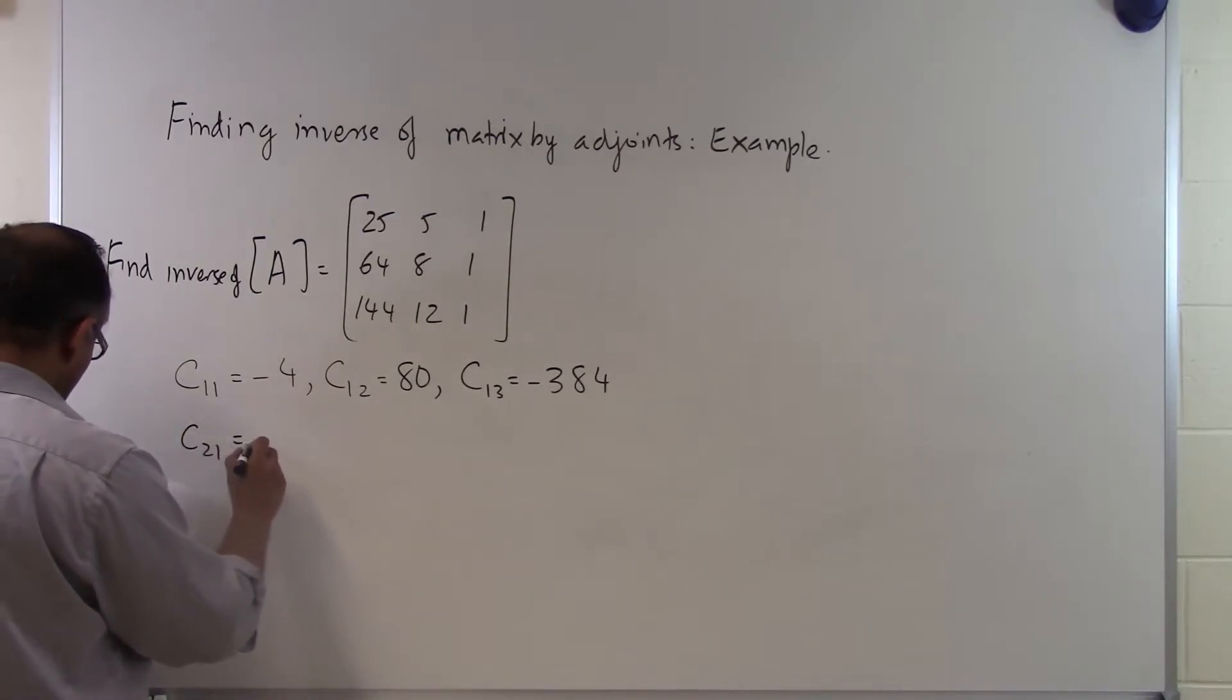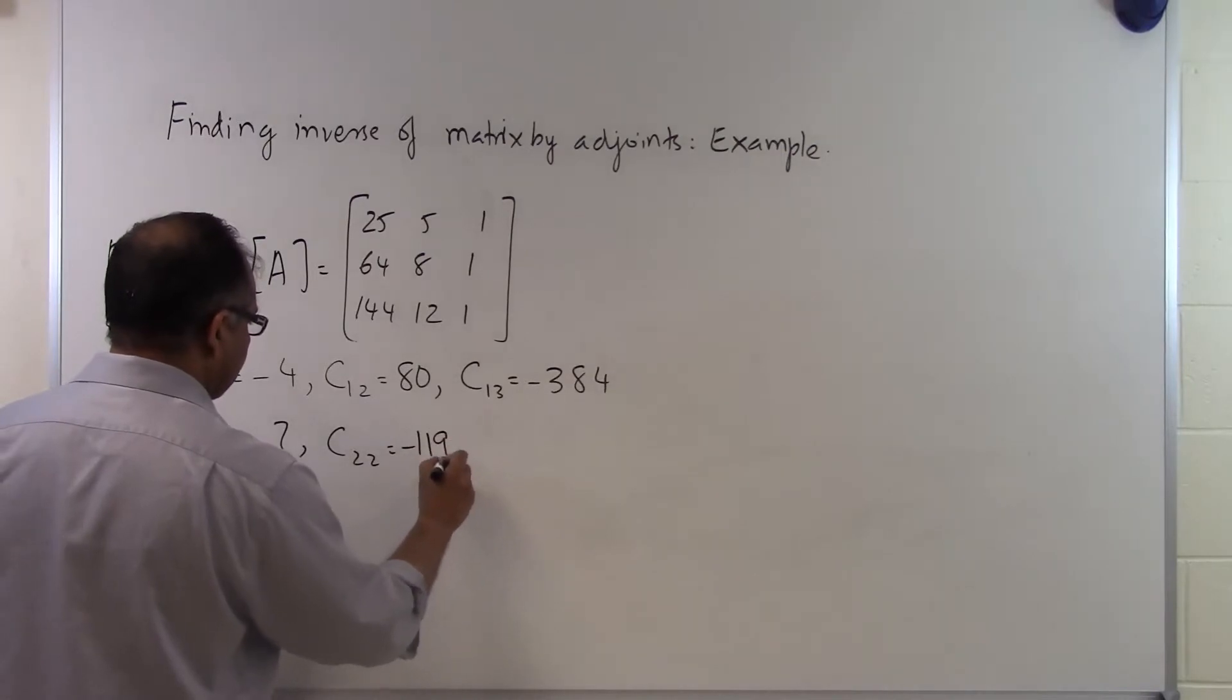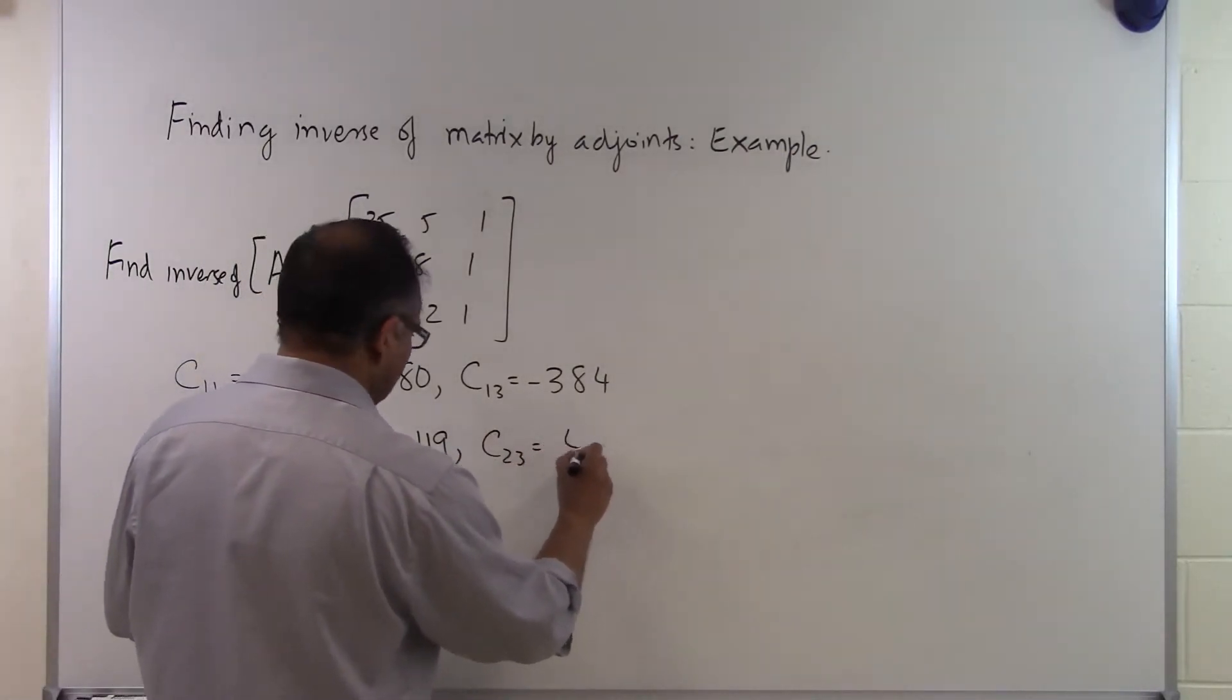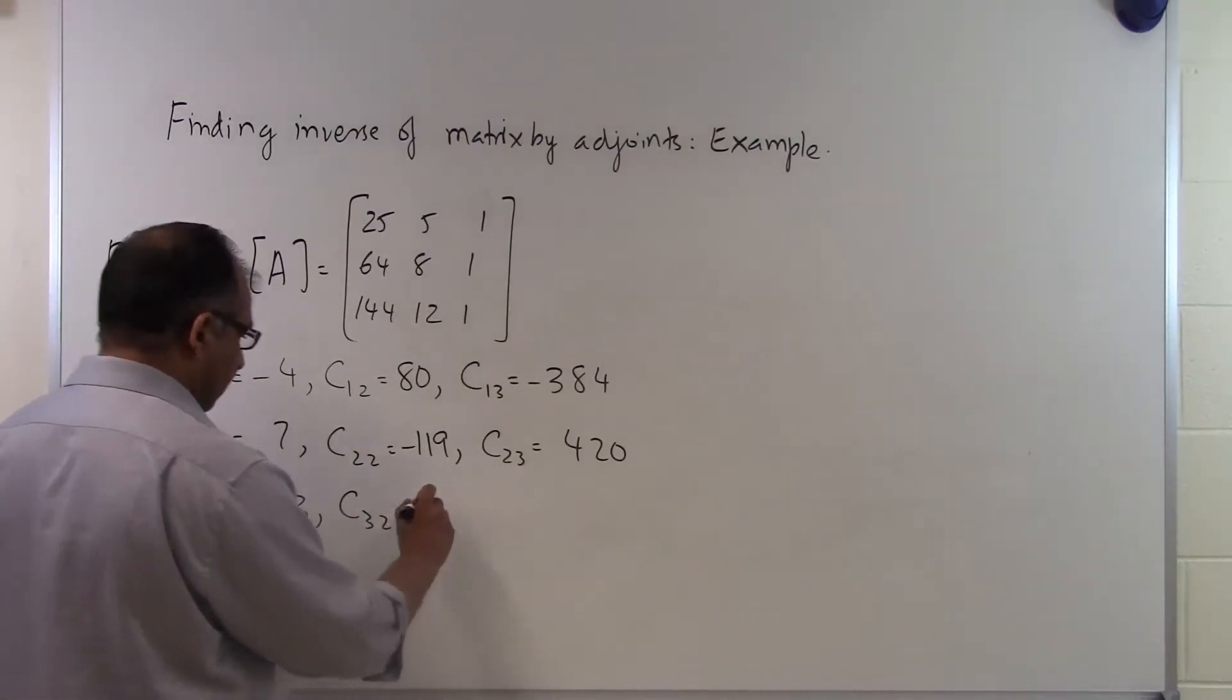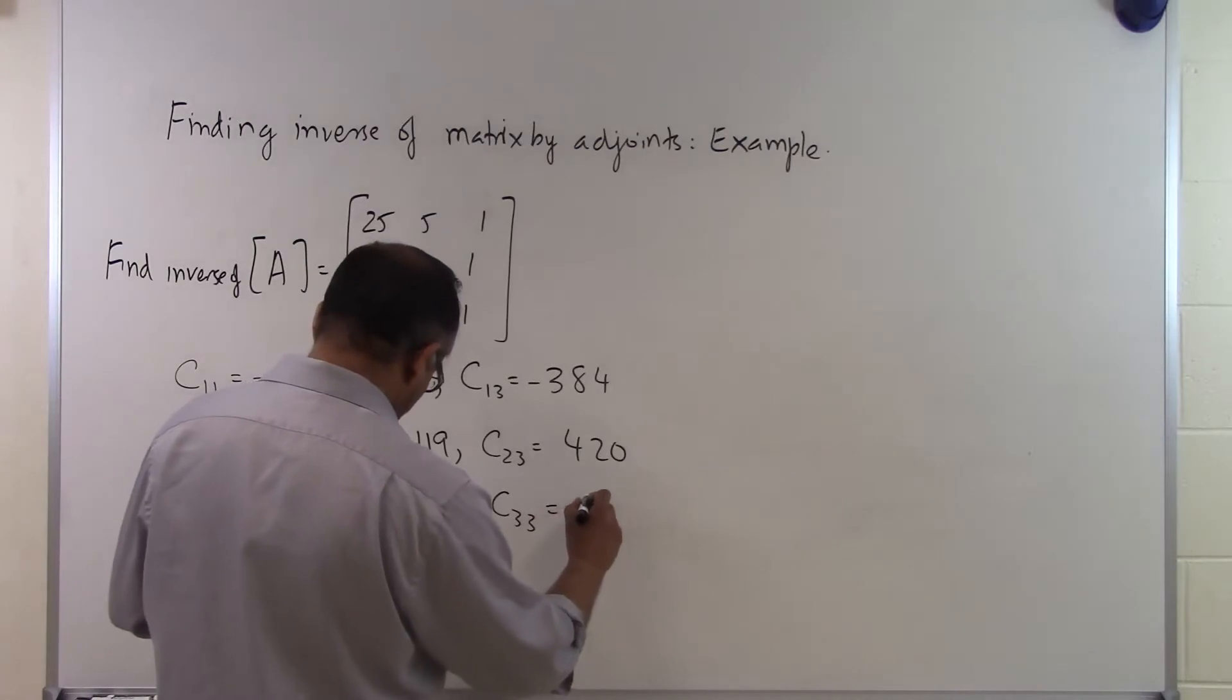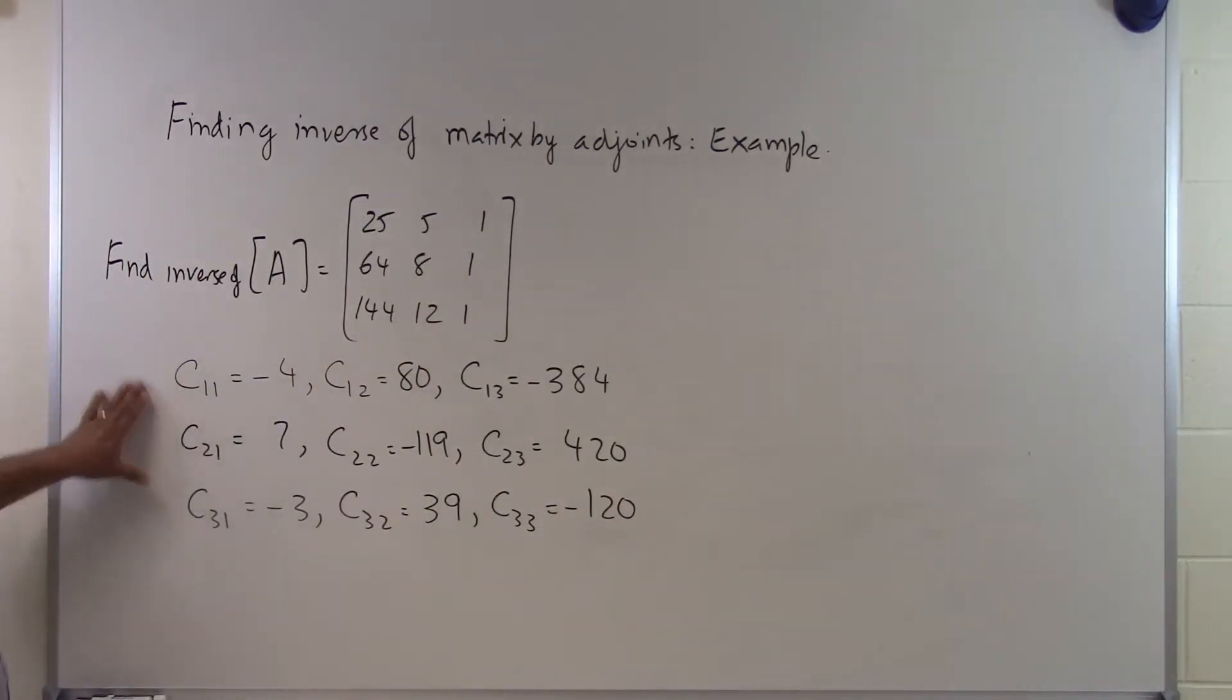You can continue the process here. C21 turns out to be 7, C22 turns out to be minus 119, C23 turns out to be 420. Then C31 turns out to be minus 3, C32 turns out to be 39, and C33 turns out to be minus 120. So these are the cofactors which we get corresponding to the nine elements of the A matrix.